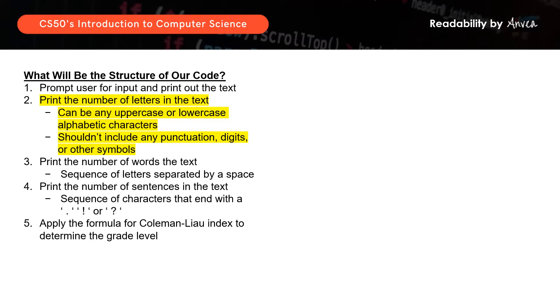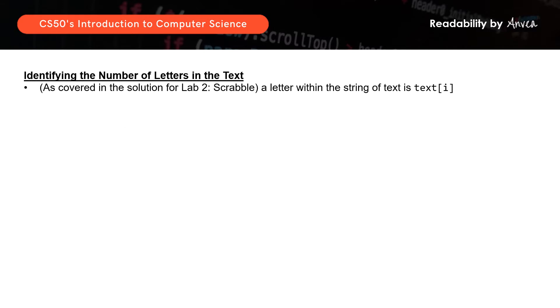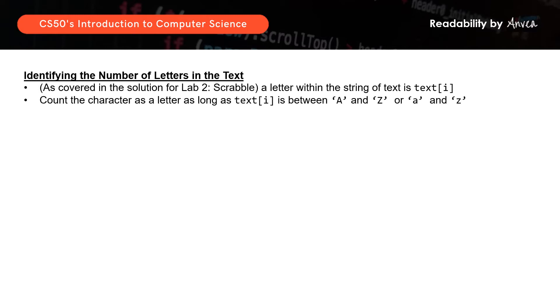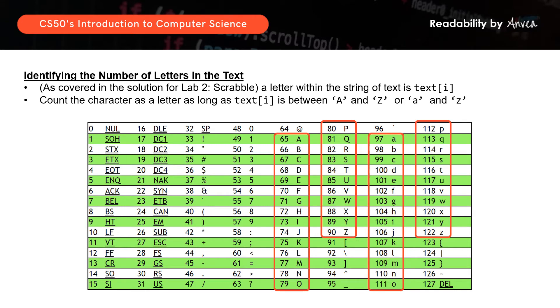Next, we want to print the number of letters in the text. We covered this in the solution for lab 2 Scrabble — do hop over to my other video if you haven't caught it yet. We'll get the program to go through each letter in the string represented by text and count as long as the character falls between uppercase A and Z or between lowercase a and z on the ASCII chart.